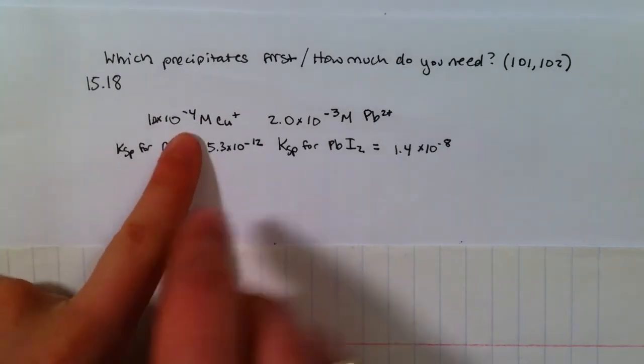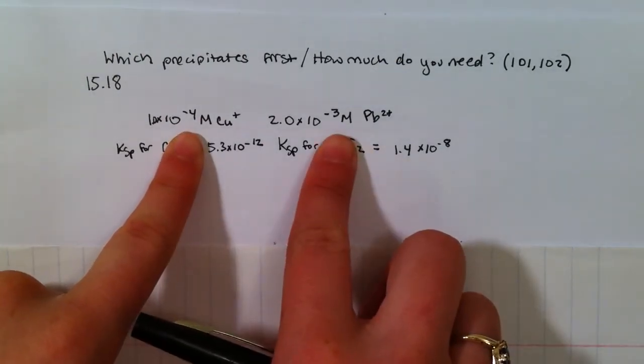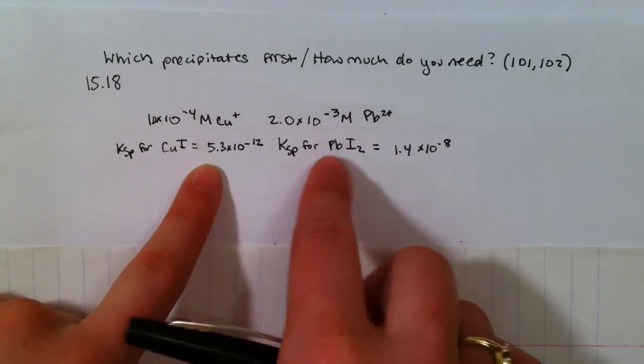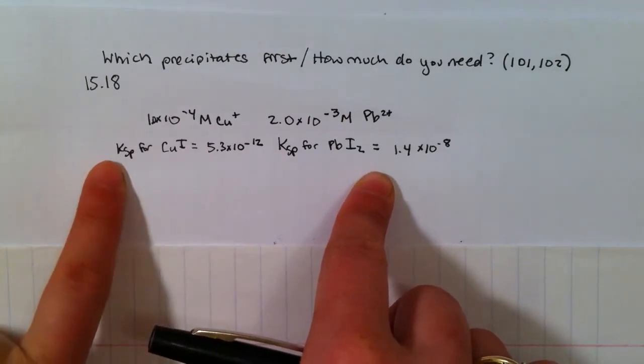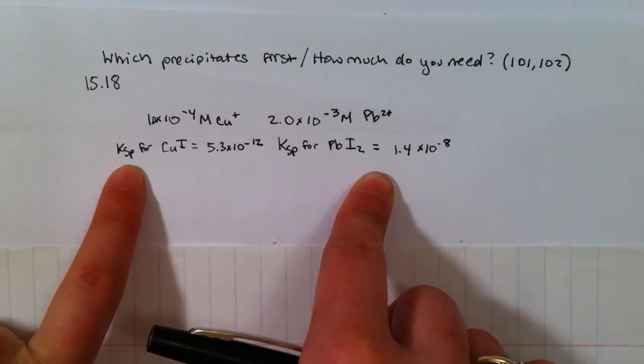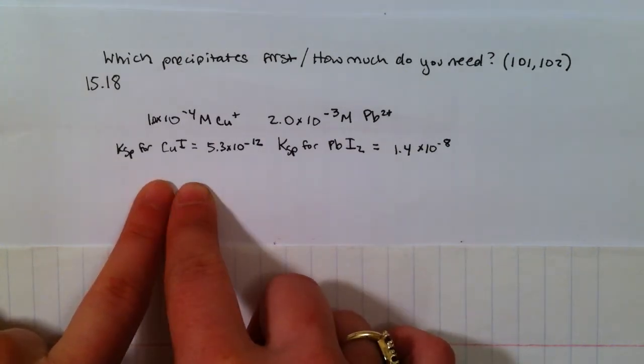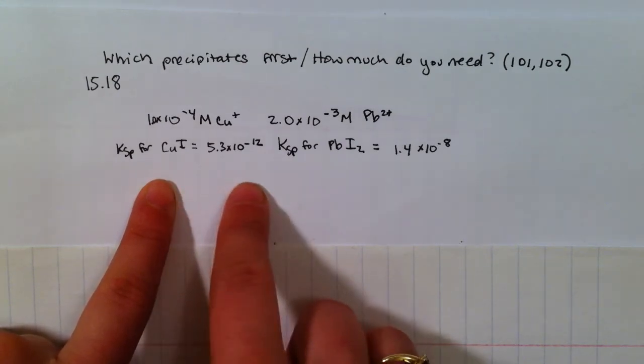Now we're asked, if I have these two things in the beaker and I start adding I-, which one is going to precipitate first? To figure that out, you need to remember what Ksp is. It's the solubility product, the multiplication of the two ions that will be able to dissolve, the amount of ions that will be able to dissolve.